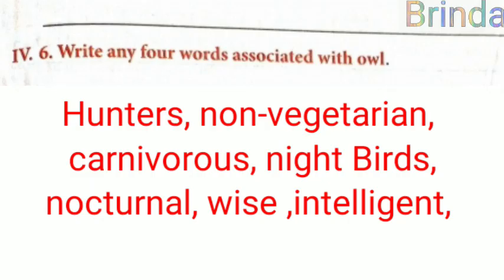Roman number four, question six: Write any four words associated with owls. Owls are hunters. They are non-vegetarians. Owls are night birds — we can otherwise call them nocturnal animals. They are wise and very intelligent. We even call a group of owls a 'parliament of owls.'